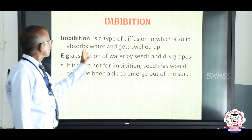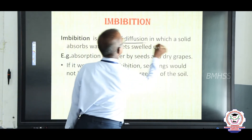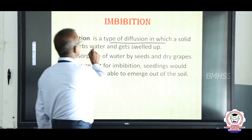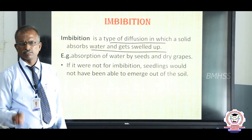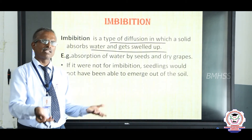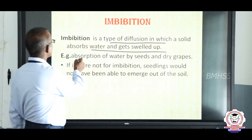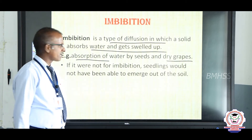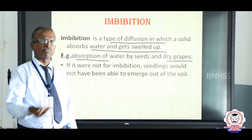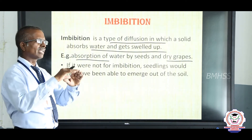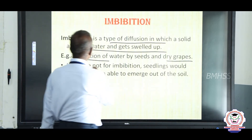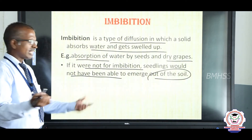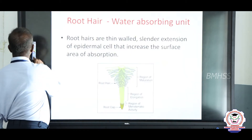What is imbibition? Imbibition is a type of diffusion in which a solid absorbs water and swells up. For example, raisins and dry grapes placed in water will be swollen the next day — this is an example of water absorption. Similarly, when a seed is placed into soil, it swells up and a young plant emerges. If there were no imbibition, the seedling would not be able to emerge out of the soil. Imbibition is very important.